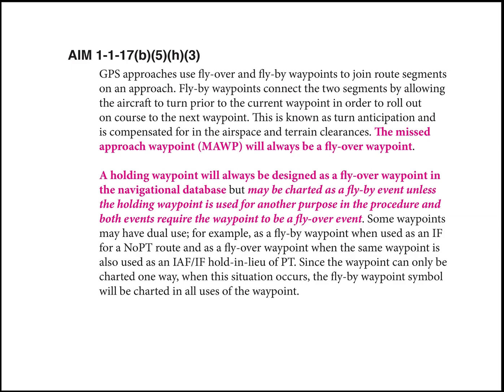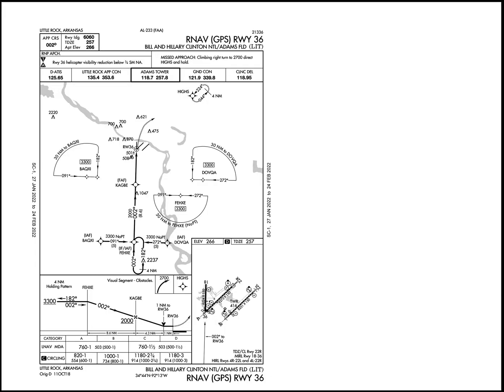Let's apply this to a scenario. Let's imagine we're at Little Rock, coming from Dovka. When we come from Dovka, we fly by Phexi, which is fine — we can do turn anticipation, and you've probably seen this in your FMSs. Of course, when we get to the missed approach waypoint, it's a fly-over waypoint. Then when we miss, we go out to Highs. Highs, even though not depicted as a fly-over waypoint, it is, and you enter the hold as a fly-over waypoint.